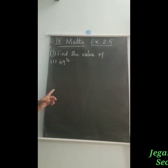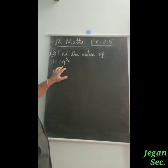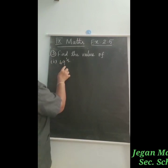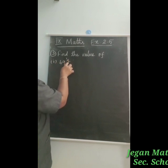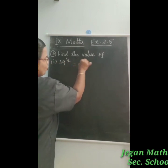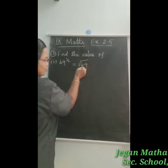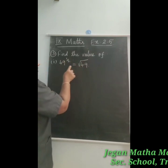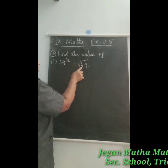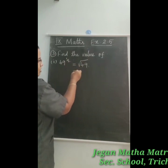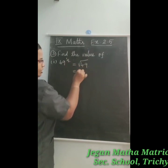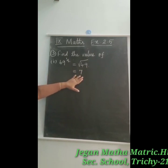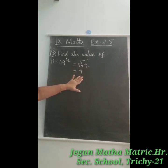The third question asks us to find the value of 49 power 1 by 2. We take 49 power 1 by 2 as equal to root 49, because the power 1 by 2 means square root. So what is the value of root 49? Since 7 squared equals 49, root 49 is equal to 7.